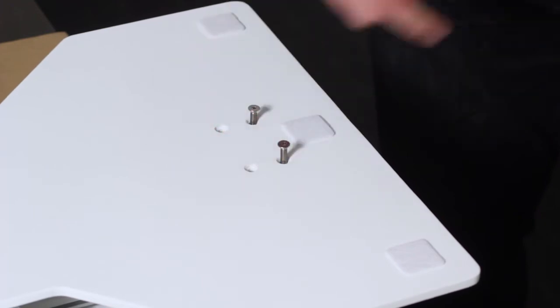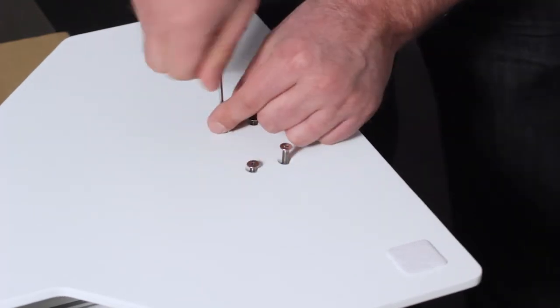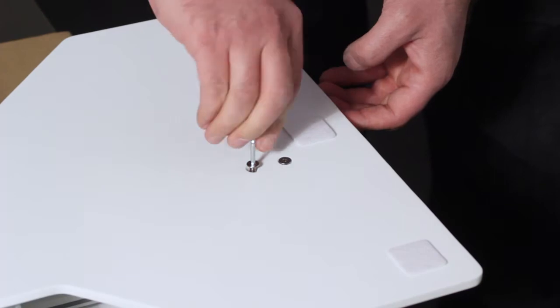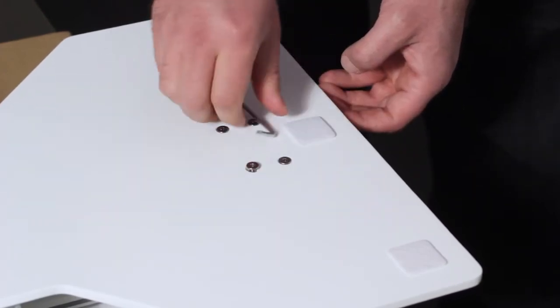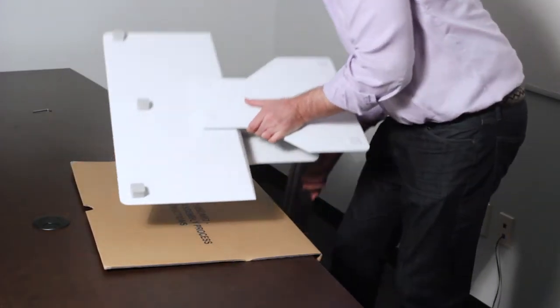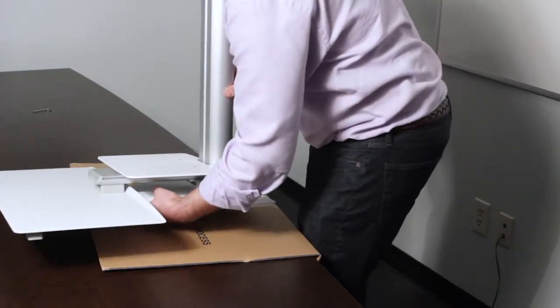The countersunk holes and the felt pads of the steel base plate should be facing you. When the base plate is firmly attached, flip the unit over onto the desktop or work surface where you plan to use it.